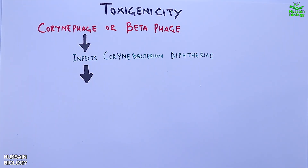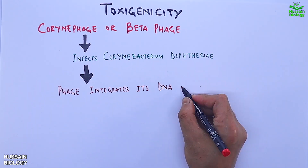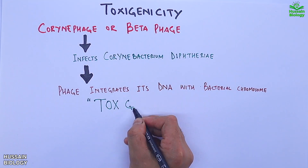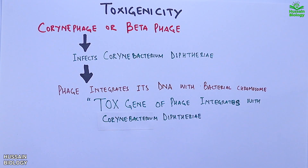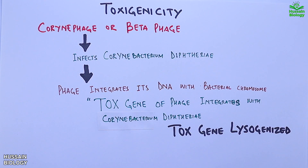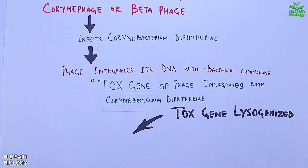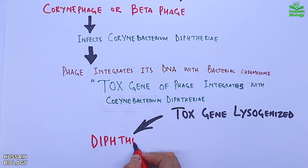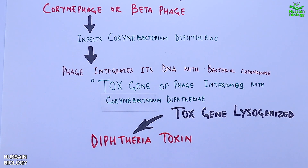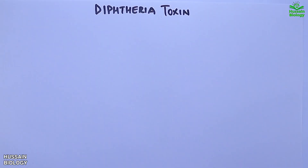The tox gene of the phage integrates with Corynebacterium diphtheriae, and we get the tox gene lysogenized. From here, this tox gene in the bacterium expresses itself in the form of the toxin, which we call the AB toxin, or diphtheria toxin.